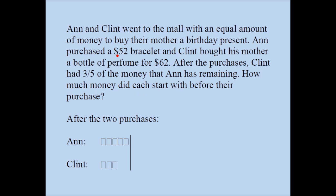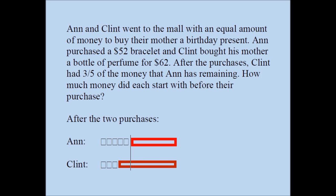Clint spent $10 more than Ann. So let's say this is the amount Ann spent, and this is the amount Clint spent. The total amount of money the two siblings originally had must be the same. The smaller red rectangle represents the amount Ann spent, and the bigger red rectangle represents the amount Clint spent. The difference between the two amounts is $10, so just this part has to be $10.